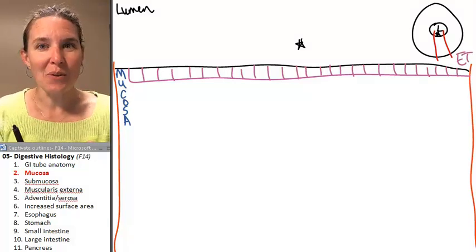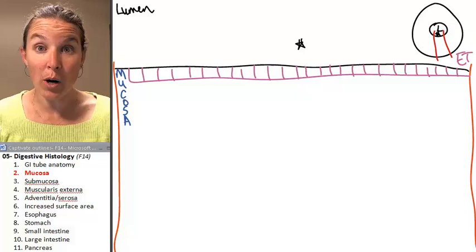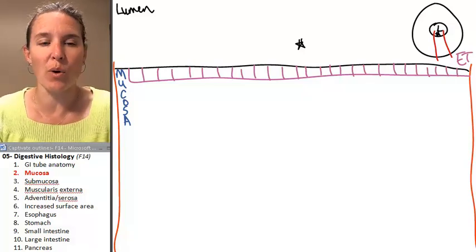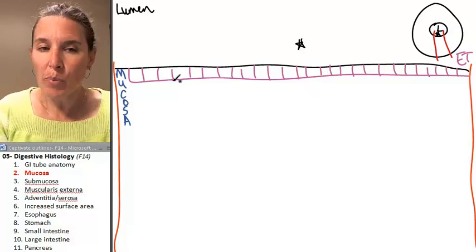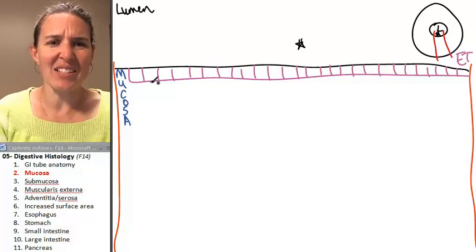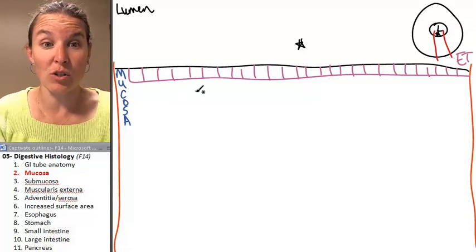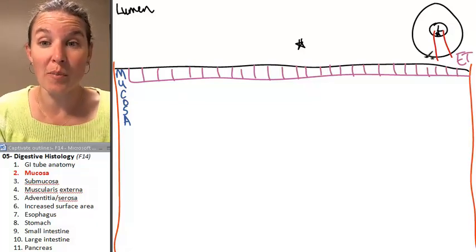The epithelial tissue varies depending on what part of the tube you're in. So it's actually kind of a handy way to identify where you are in your tube. But for our purposes, this looks cuboidal. Most of the digestive tube is lined with simple columnar epithelium.